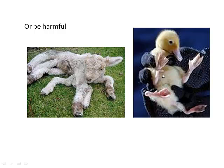These two are both showing a mutation in a gene that controls how the body plan is organised early in the development of the foetus. This little lamb has got what looks like eight legs and the little duck has four, and of course in the wild they wouldn't survive. So mutations can either be beneficial — good for an individual — neutral and not matter at all, or harmful.